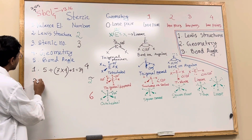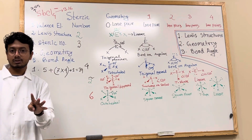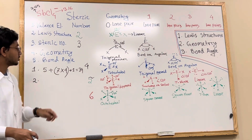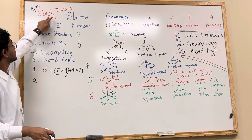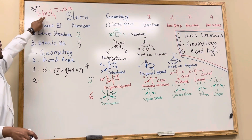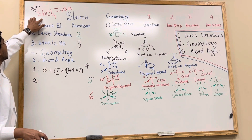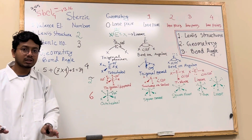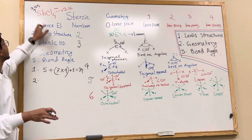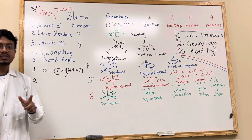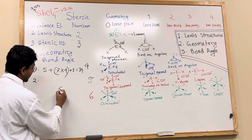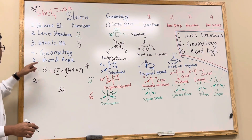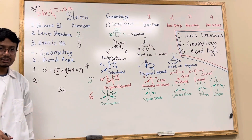Before drawing the Lewis structure, we need to know which atom goes in the middle. To determine that, we find the least electronegative element. Antimony has an electronegativity of 2.05 and chlorine has 3.16. So antimony has the least electronegativity and it will go in the middle as the central atom.